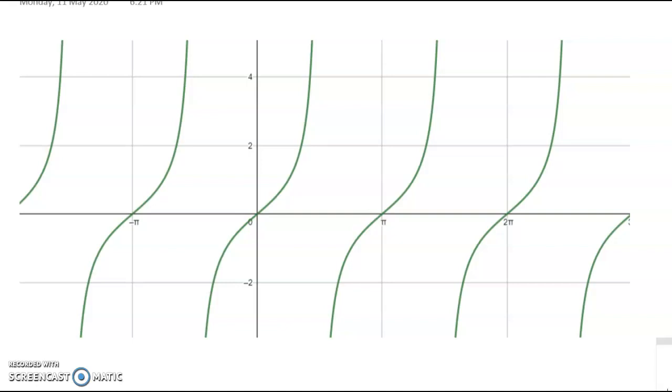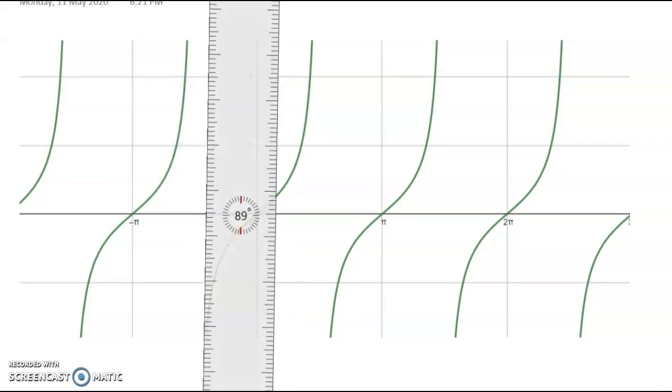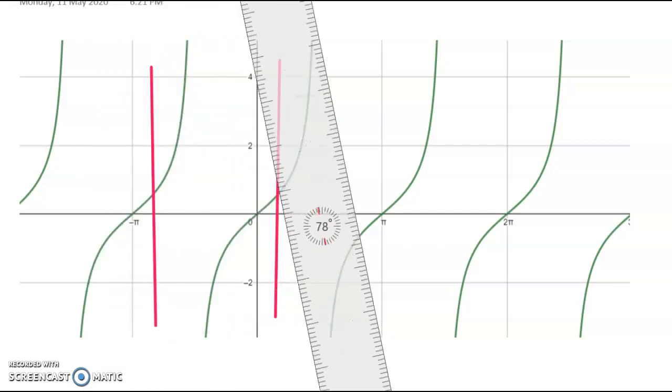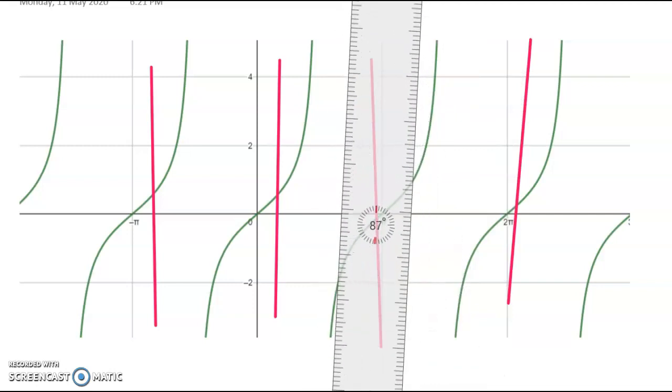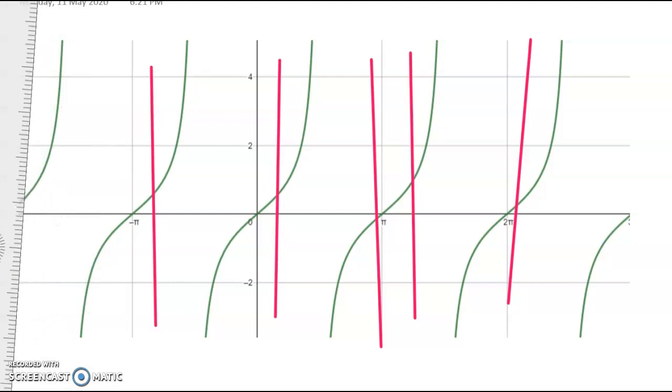So the big idea behind a function is does it pass the vertical line test. Right so if I look at this can I whack a vertical line into my function and they're meant to be vertical lines guys, sorry, very long day in a very long seven weeks. I'm looking to see whether the vertical lines cut once or more than once and you can see that tan is a function because it passes the vertical line test.